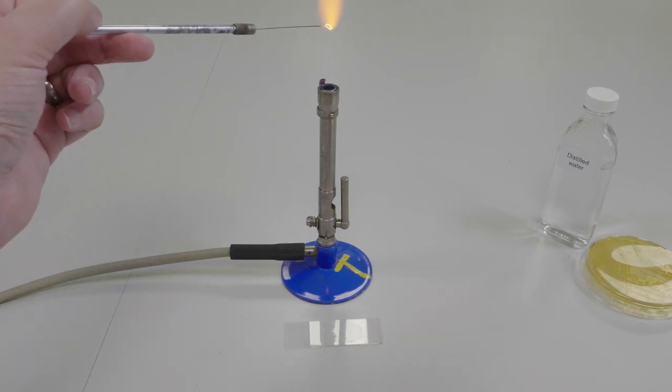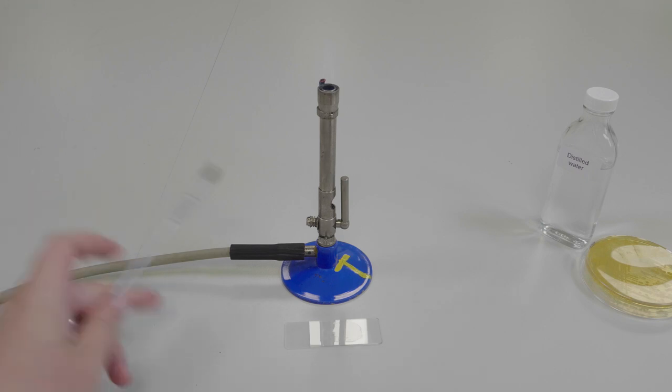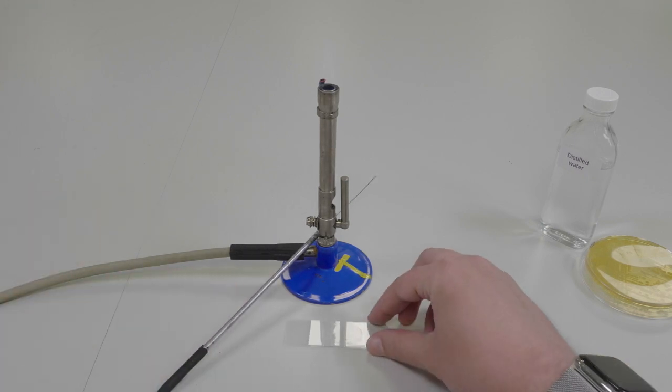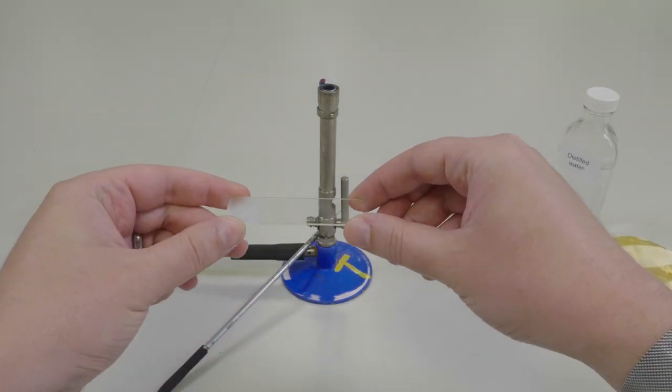Sterilize your inoculating loop and allow the water to evaporate from your slide. This should take approximately two to five minutes.